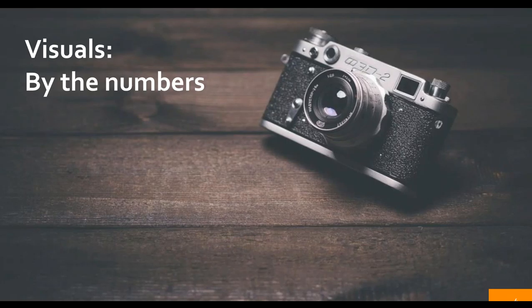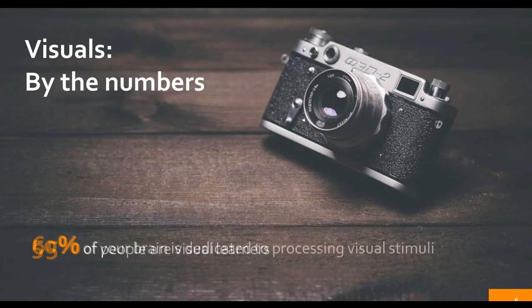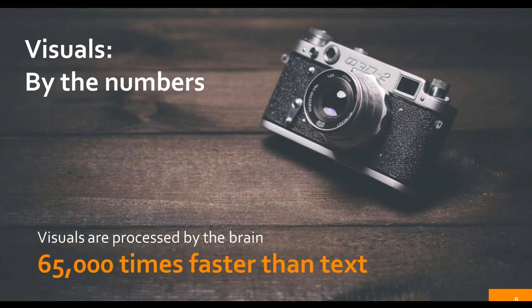If you think about why visual things can be a powerful tool to deal with information overload, here are some numbers to help. Think about why you might want to go visual: 65% of folks are visual learners, so they use their eyes rather than their ears to process things. 50% of the brain is dedicated to processing visual stimulation. And 90% of the information that comes to the brain tends to be visual. If you think of all the nuances and movements and pieces coming in for you to see, it's amazing.